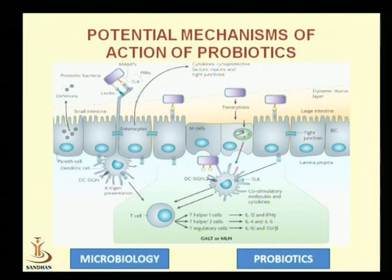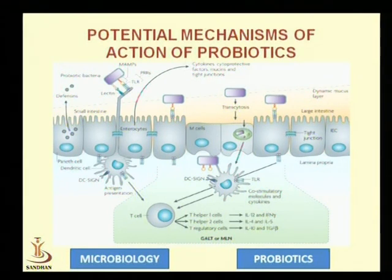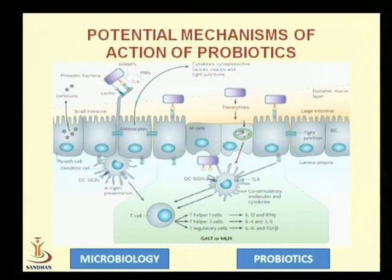In the second case, probiotic microorganisms interact with epithelial cells and are responsible for tightening the tight junctions and maintaining the integrity of columnar epithelial cells. In the third case, probiotic microorganisms interact with epithelial cells and stimulate them to produce mucus, which through a mucus barrier again inhibits the entry of pathogenic microorganisms.